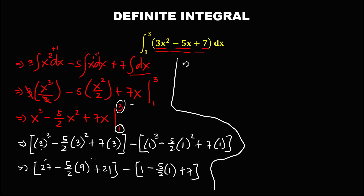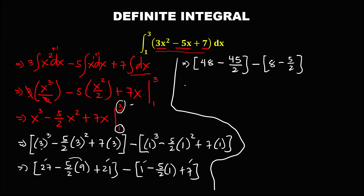So 27 plus 21 is 48. We have 48 minus 5 times 9 which is 45, so minus 45/2. Then minus (1 plus 7) which is 8, then minus 5/2. We can now use the butterfly method.